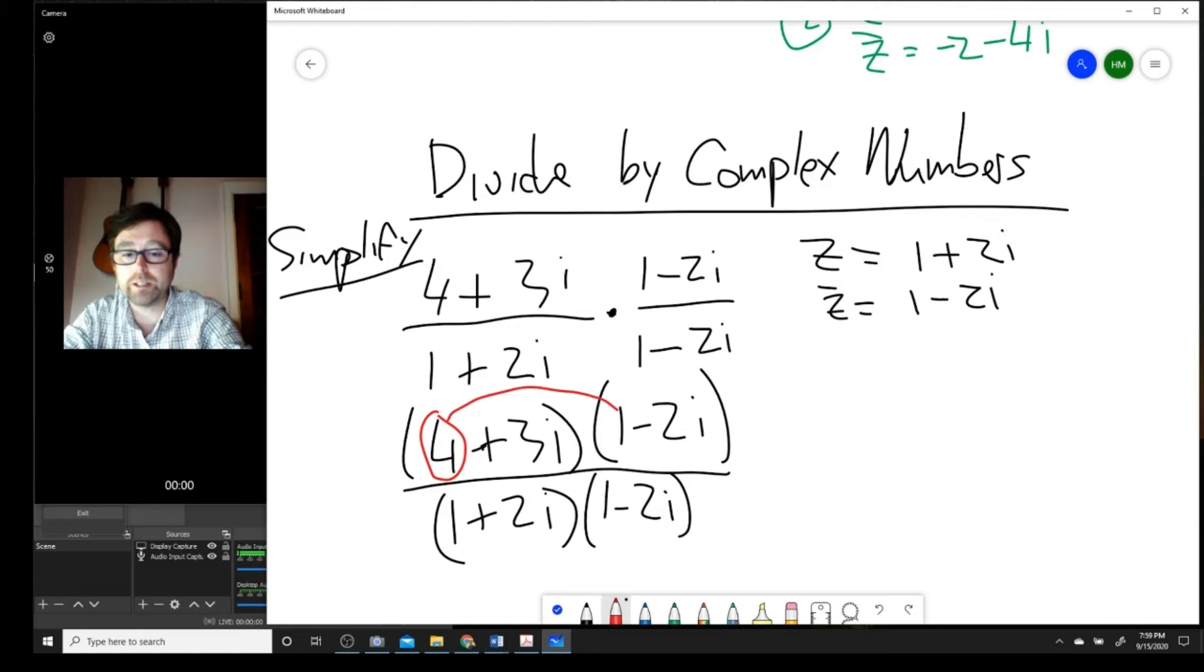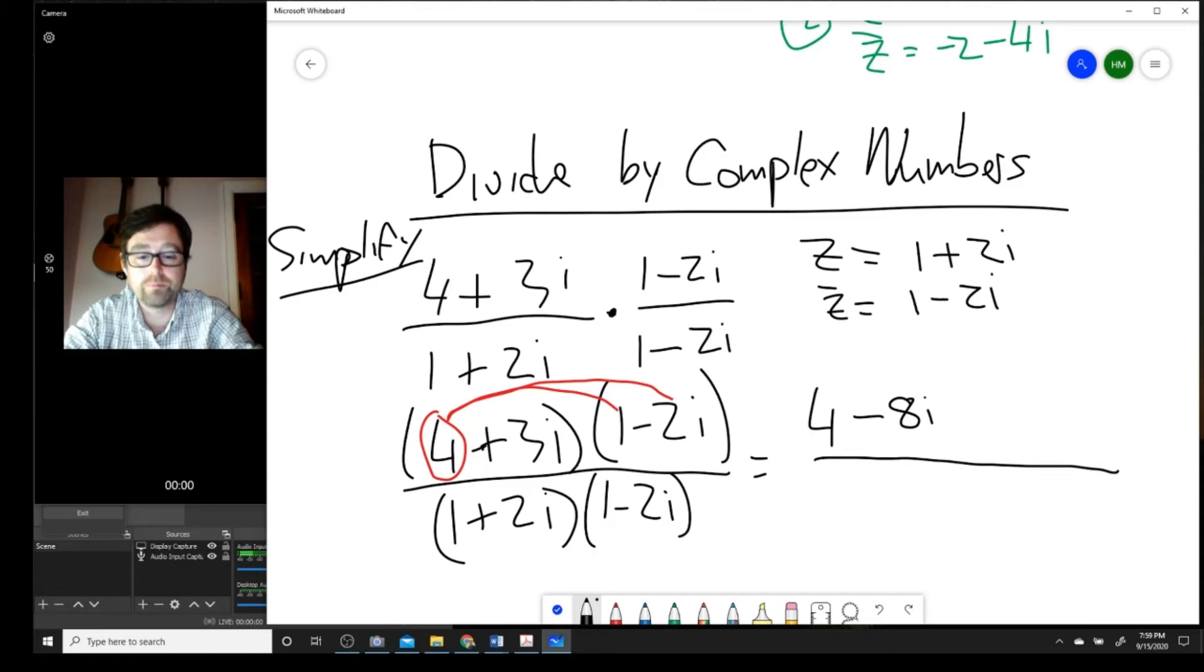Let's be systematic about our distribution. Take the first one, multiply it by the first one there, and then multiply it by the second one. So, we have 4 multiplied by 1. That's 4. Then we have 4 times negative 2. That's negative 8. And then we have an i. Then we're going to take this one and multiply it by that one. So, we have 3i times 1, and that's 3i. And then we have plus 3i, multiply by negative 2i. So it's going to end up negative. 3 times 2 is 6. And then i times i is i squared. We're going to be able to substitute that i squared for negative 1. Let's leave it there for a minute.